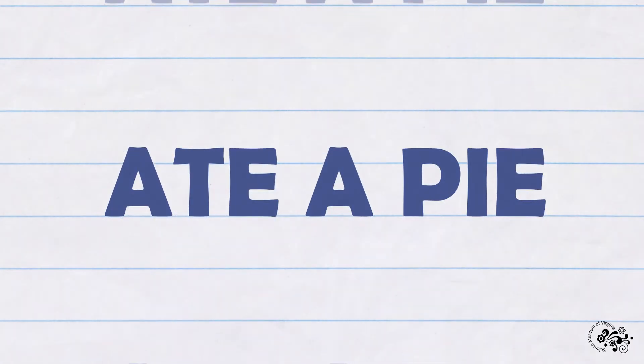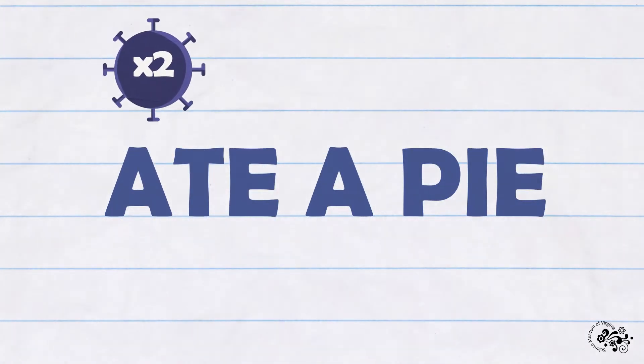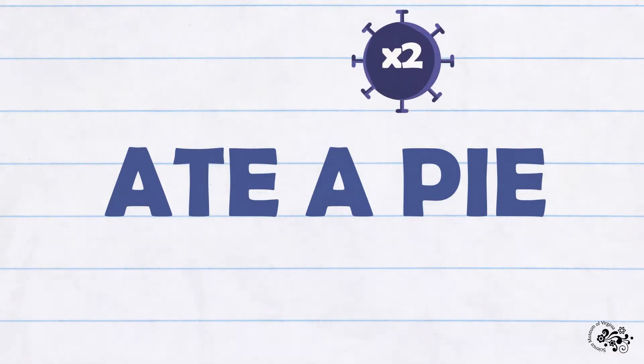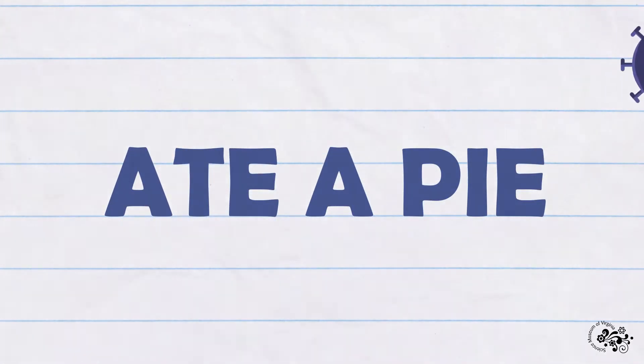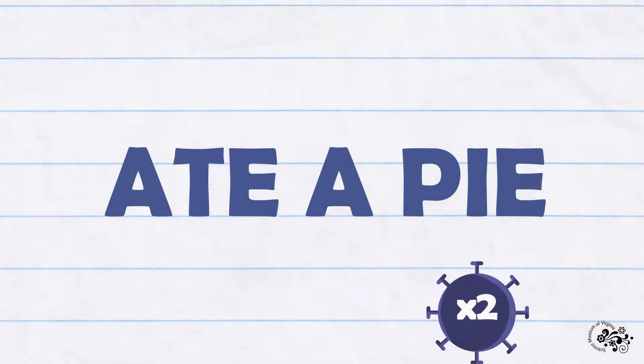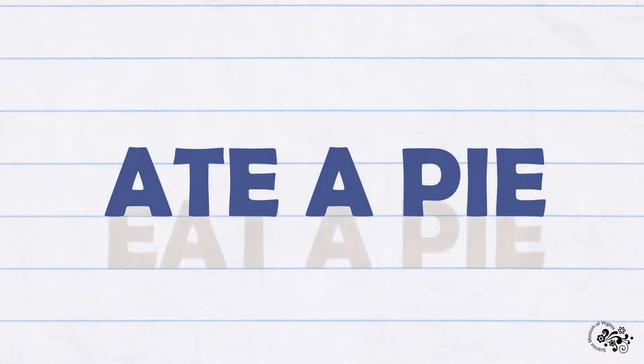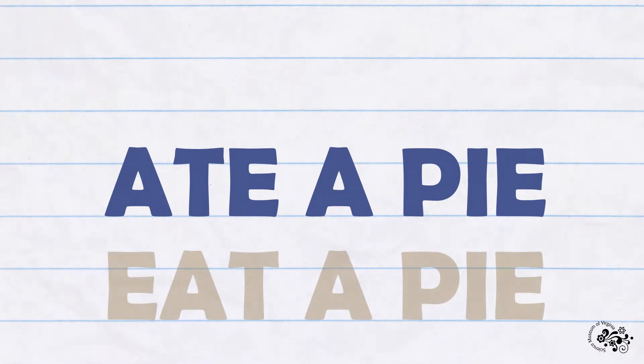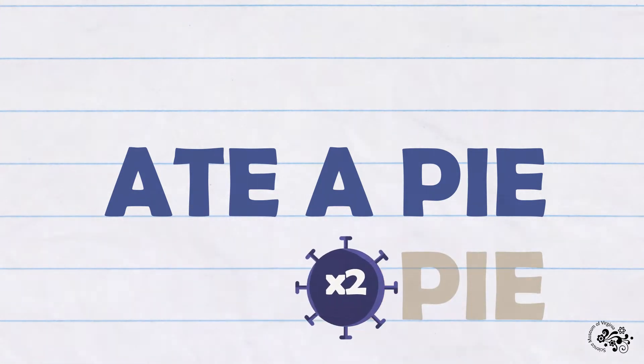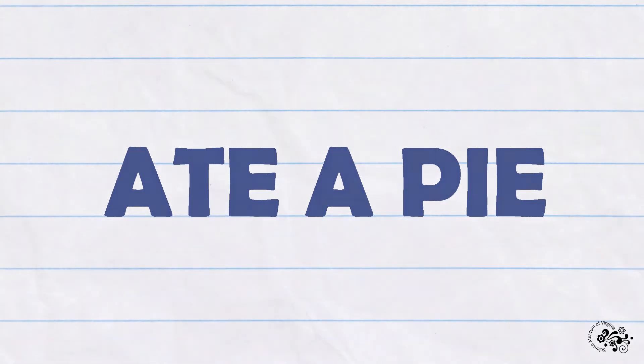A new sentence keeps getting repeated. If the 'ate a pie' variant is twice as infectious, then it spreads twice as fast, and pretty soon there aren't any more copies of the original 'eat a pie.'